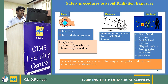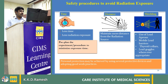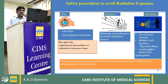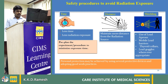Safety procedures to avoid radiation exposure include Time, Distance, and Shielding. Less time means less radiation exposure — pre-plan your procedure to minimize exposure time. Try to maintain as much distance as possible, and shielding sufficiently reduces radiation exposure to both staff and patients.